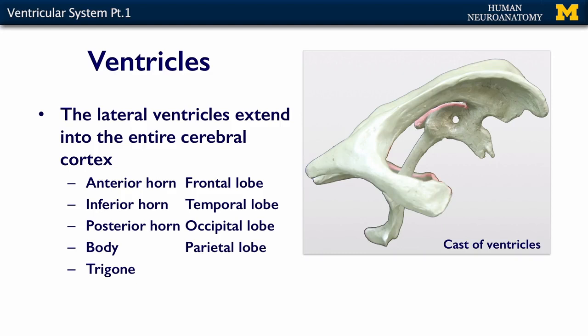Going back to our lateral ventricles — there's one in each of your cerebral hemispheres, and they span the entire range of your cerebral hemispheres. You have an anterior horn of the lateral ventricle, and this is found in sections of your frontal lobe.